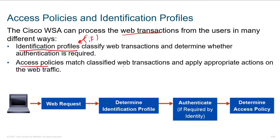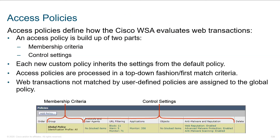The access policies are also going to match classified web transactions. So you go: who are you talking to? What type of site is it? Maybe it's a site about chemical warfare — that might be normal for your business, or it might be something a bit weird, and you want to leave that category alone. Cisco has over 80 categories, and you have the ability to create custom categories. Whatever may be appropriate or inappropriate for the organization, we can filter those types of things.